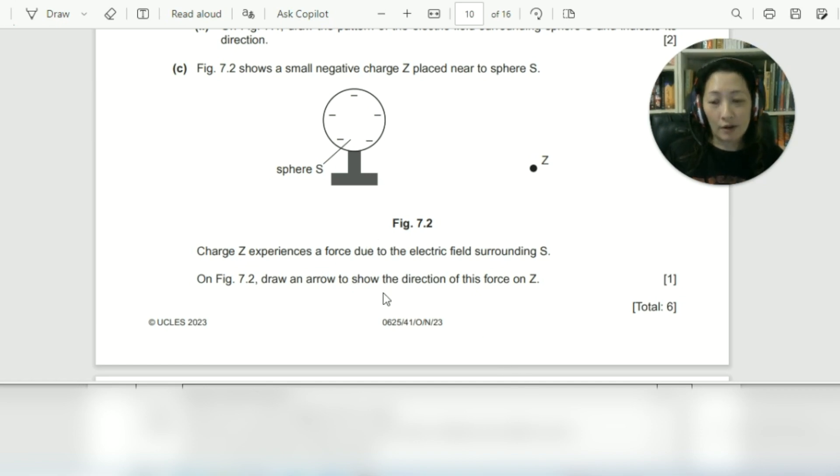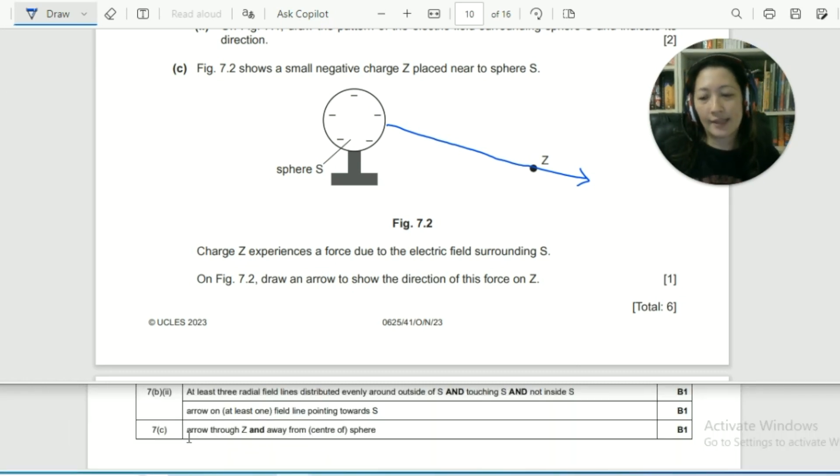So when we draw, the force comes from sphere S. So the line comes from the sphere and through Z. Now ideally, they should be a straight line. So you should be using your ruler to draw the arrow out. Let's have a quick check on the mark scheme. As you can see, they do state here that the arrow should go through Z and away from the center of the sphere because the force comes from the center and not some random surface actually. So roughly about center? Yeah, kind of. So that's how we draw the force line acting on Z.